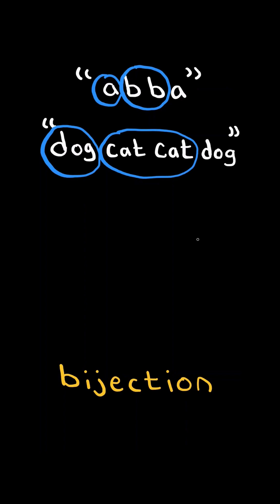For example, we can map A to dog, B to cat, and A already maps to dog. So this is a bijection.